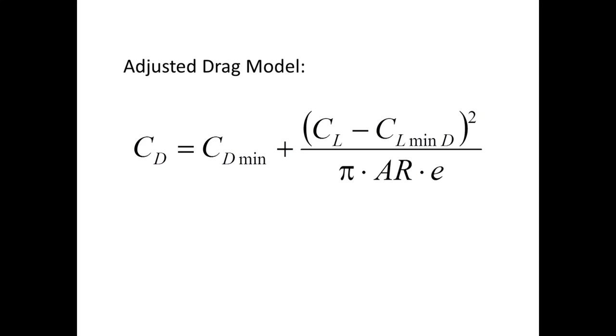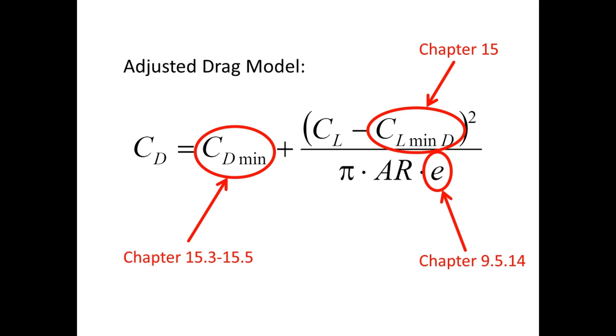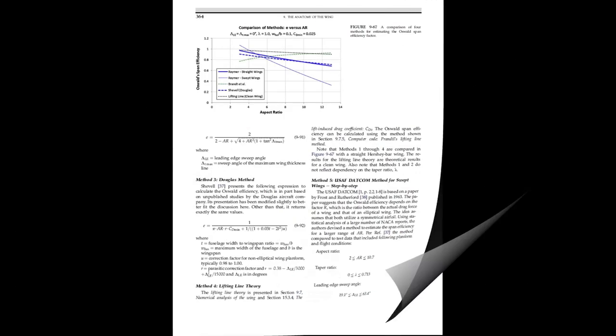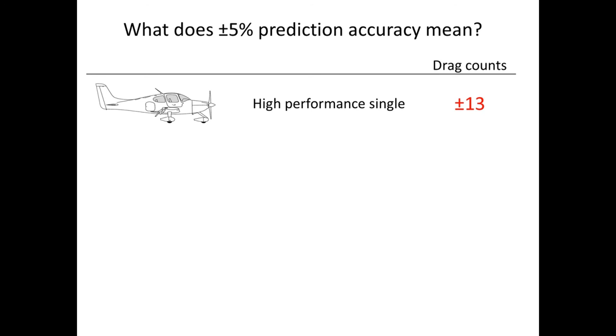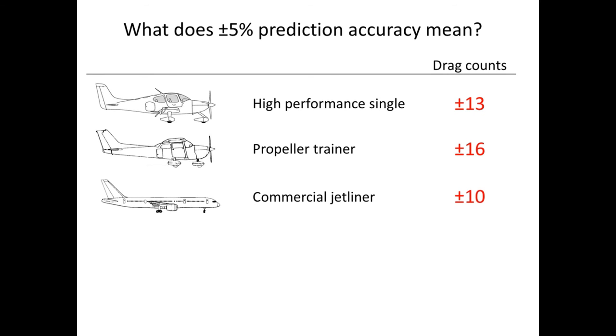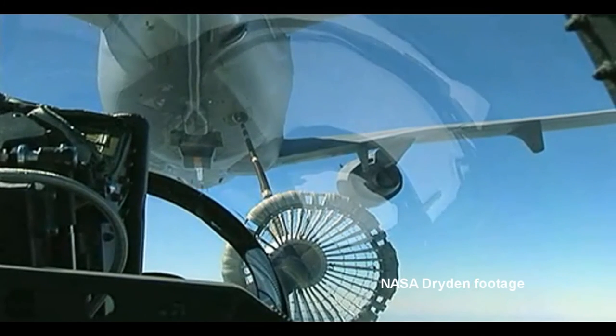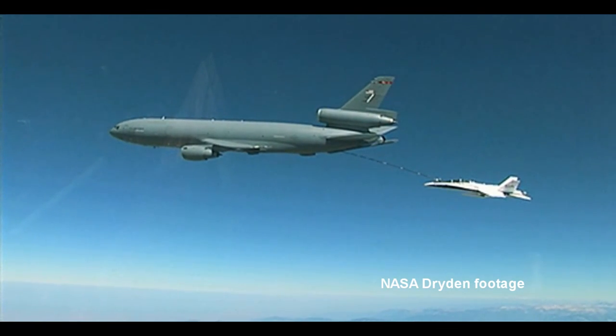To the question, for the adjusted drag model, how does one predict the minimum drag coefficient, Oswald span efficiency, and lift coefficient of minimum drag for a brand new aircraft? Methods for this are provided in chapters 9 and 15 in the book. The final question presented here is, what is acceptable accuracy of prediction? Plus or minus 5% accuracy for an SR22 style aircraft whose drag coefficient is calculated in my book means plus or minus 13 drag counts of the actual CD-min. For a propeller driven trainer, it means plus or minus 16 drag counts. For a commercial jetliner or a jet fighter, it means approximately plus or minus 10 drag counts. And for a sailplane, it means plus or minus 5 drag counts.